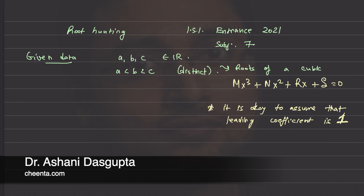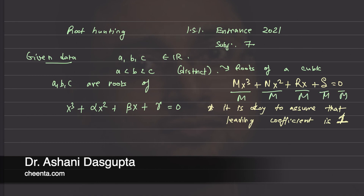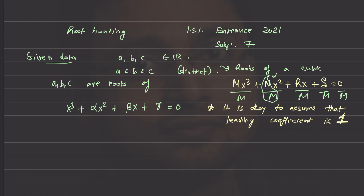We can just divide by whatever the leading coefficient is and get an equation with the same roots. So what we can write is that a, b, c are roots of x³ + αx² + βx + γ = 0. I just divided by m and renamed n/m as α, r/m as β, and s/m as γ.